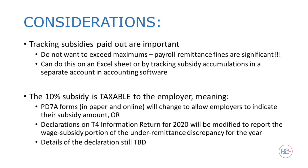Secondly, this 10% subsidy is taxable income to the employer. What this means is that there has to be some way for CRA to track the total subsidy that each employer received. I would have first thought that CRA would change up the PD-7A forms that everyone uses to pay their payroll remittances. However, as of today, there have been no changes to the standard form, either in paper or online. Therefore, I anticipate that this subsidy will be a reportable item when employers file their T4 information return, since they will find a discrepancy between the deductions that should have normally been remitted and the deductions that were actually paid, which would be less. These reporting details are still to be sorted out, but this is my best guess right now.